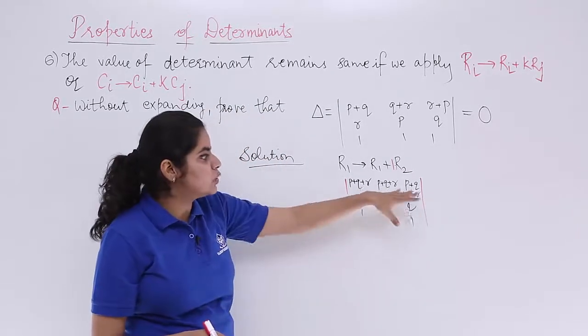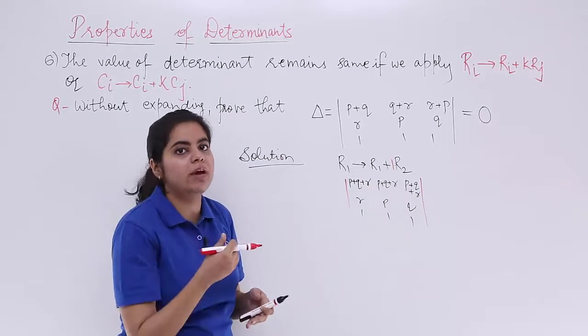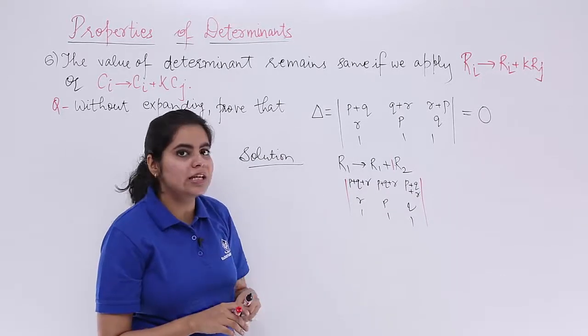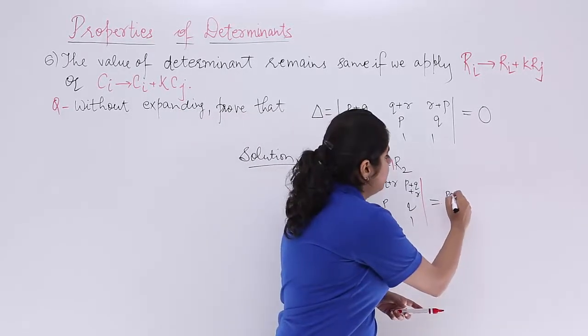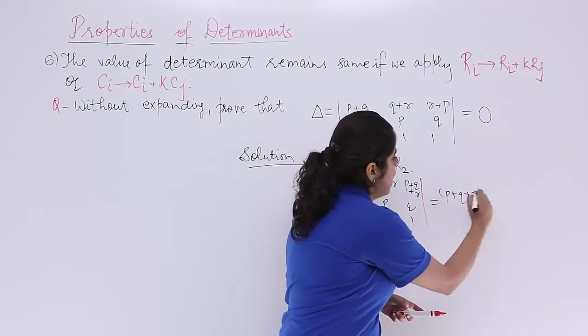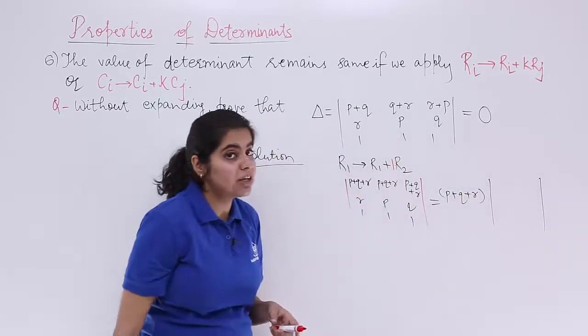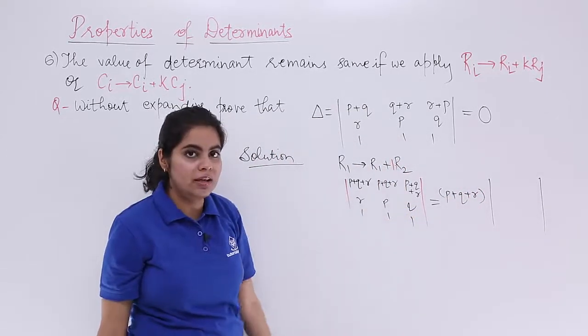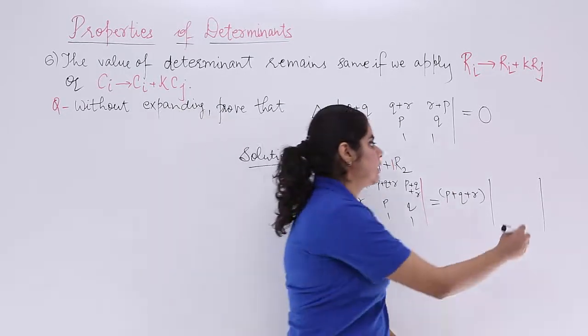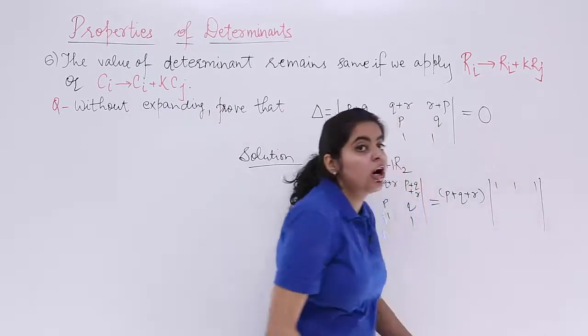Now, you see that P plus Q plus R is coming everywhere in the first row. Let's take it out as common. So it is P plus Q plus R outside, inside what you have 1, 1, 1. Because when you take it out as common, nothing is left.